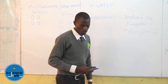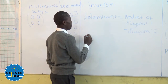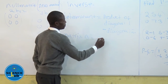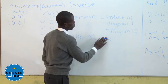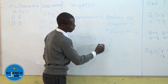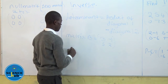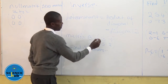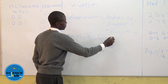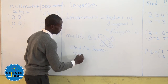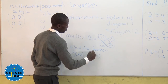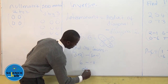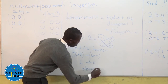If we take an example, we take matrix B given by 3, 2, negative 1, and 5 — a two by two matrix. You need to find its inverse. The determinant will be 3 times 5 minus 2 times negative 1, which gives 6 minus negative 5. Hence the determinant is 11.